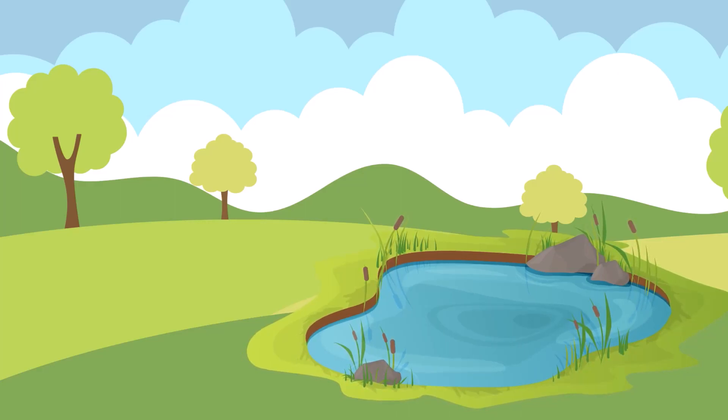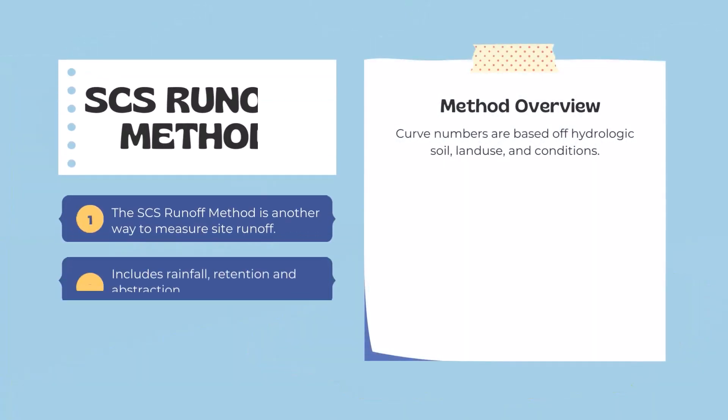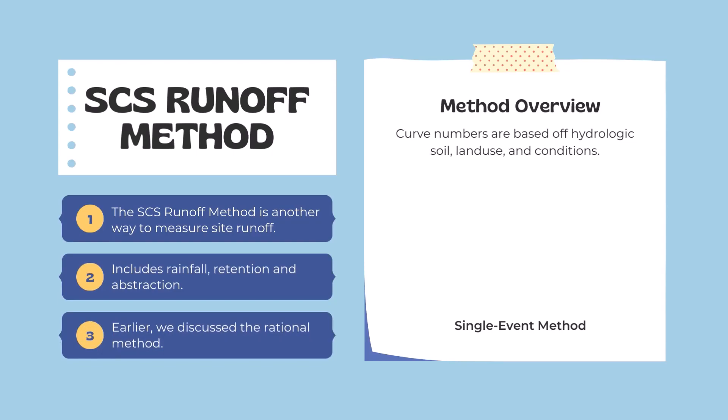So let's go over an overview of the SCS runoff method. It's another way to measure runoff; it includes the variables of rainfall, retention, and abstraction. Similar to the rational method but with quite a few differences, we're using curve numbers which are based off hydrologic soil, land use, and conditions. The SCS runoff method is another single event hydrology method, meaning it's not modeling the hydrologic cycle based on a time step — it's based off a single event occurring, most likely in a vacuum-like scenario.